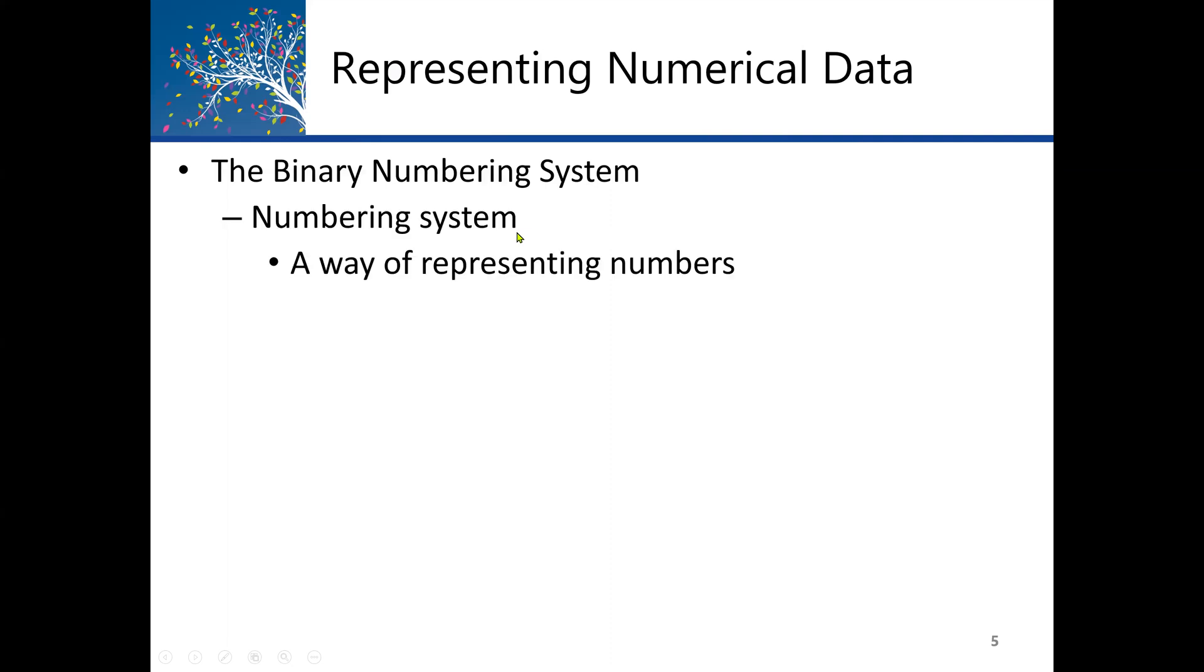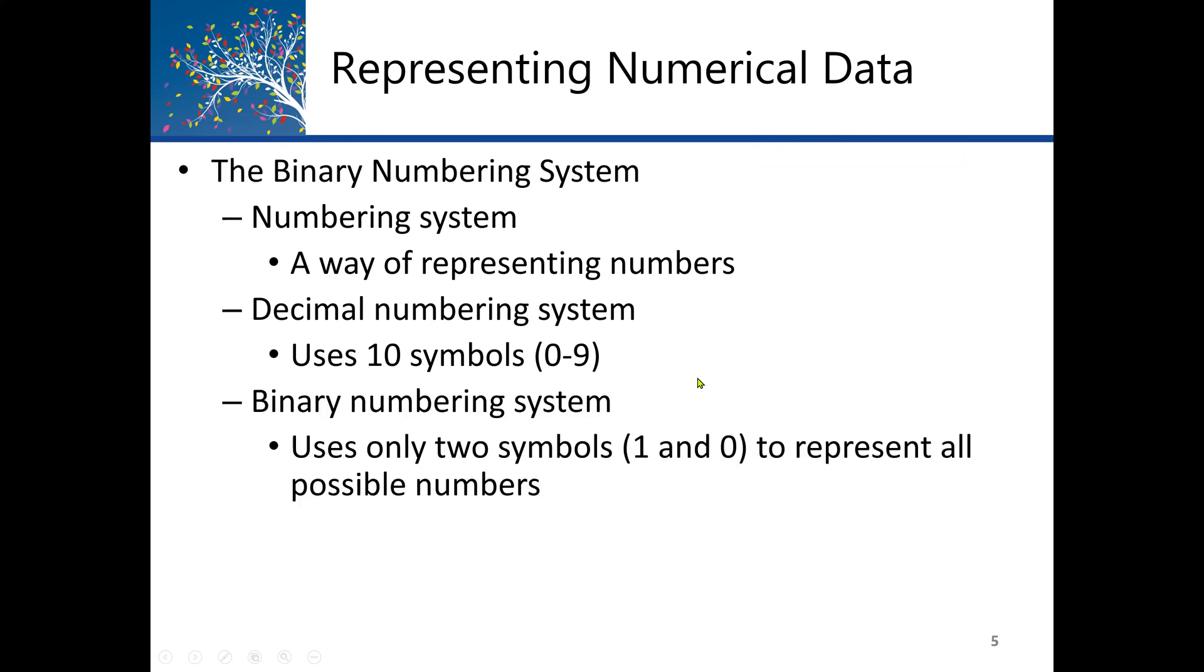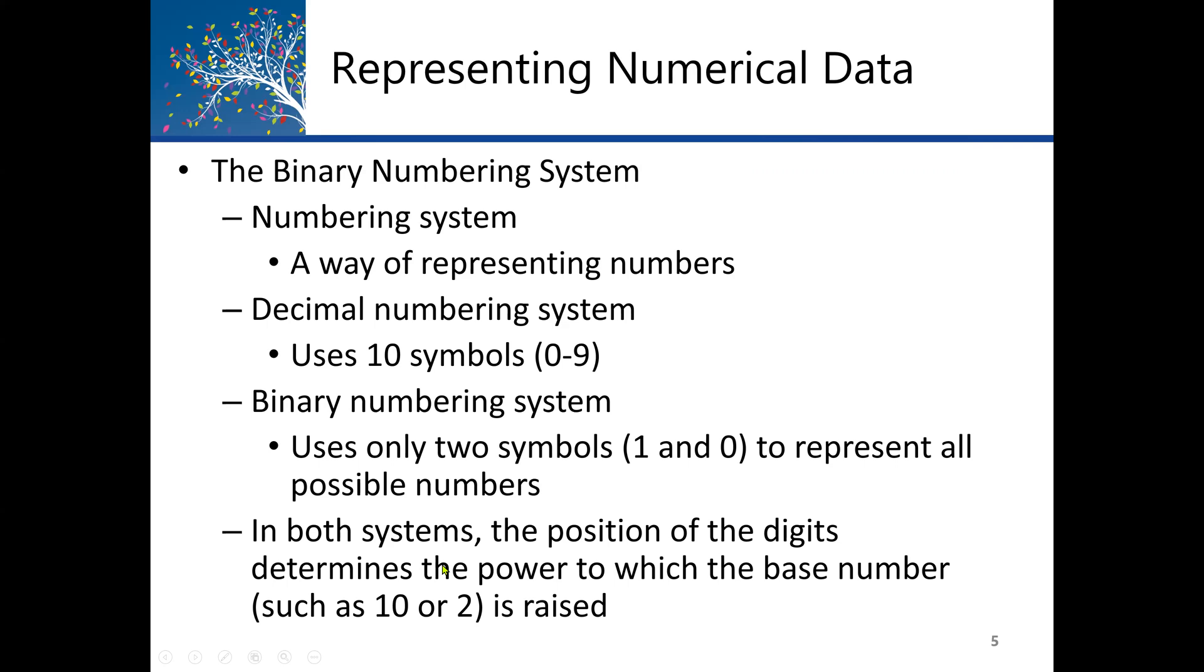A binary number system, as we said earlier, is a way of representing numbers. We also have a decimal number system, which normally uses ten symbols. We understand decimal number system, which represents digits from zero to nine. Binary number system is only two digits. Binary number system uses only two symbols, one and zero, to represent all possible numbers.